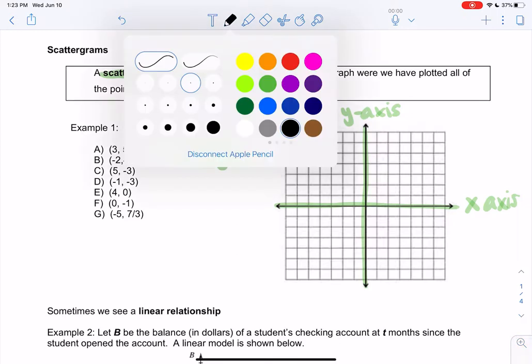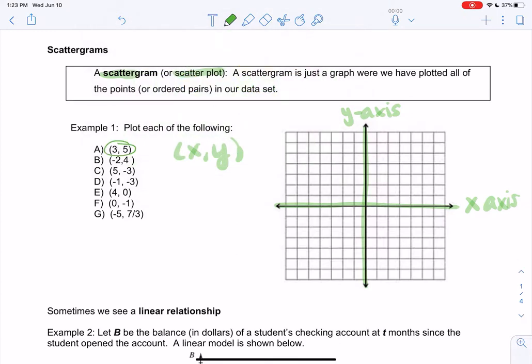So we're going to go to 3, 5, which means we go to the right 3, and then we go up 5 from the center. So 1, 2, 3, that's 3 for x, and then 1, 2, 3, 4, 5. That would be the ordered pair, or the point, 3 comma 5.